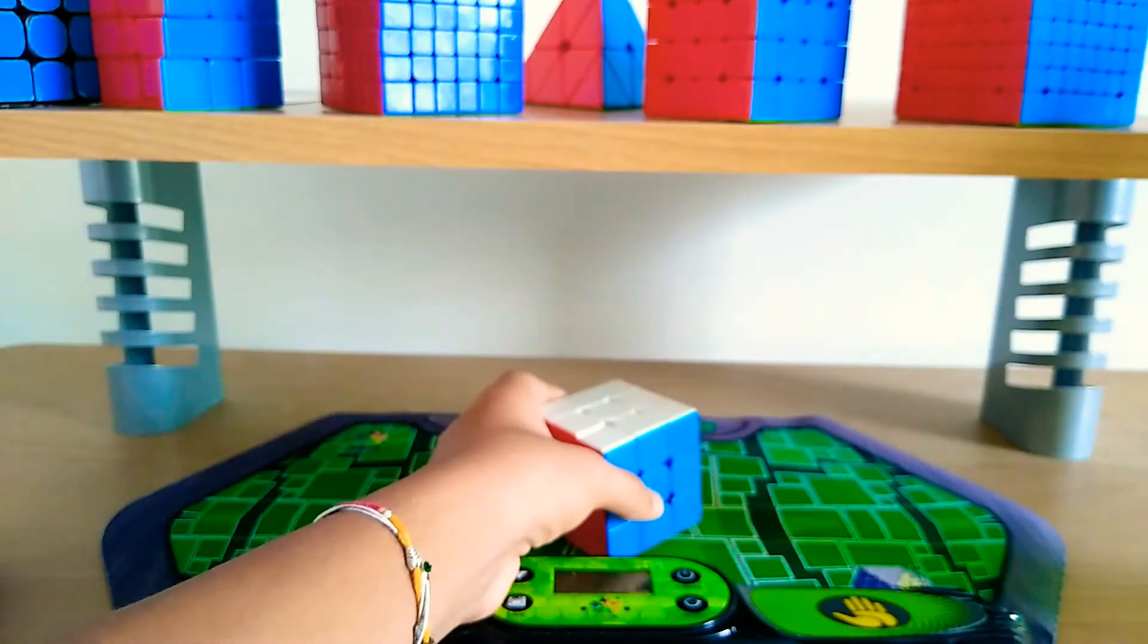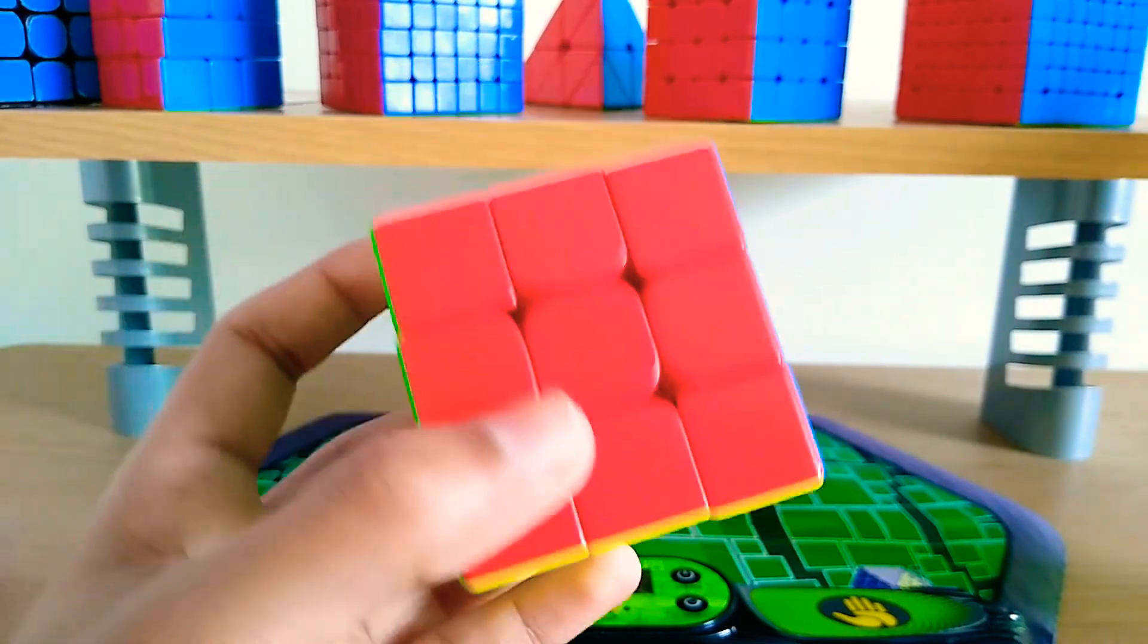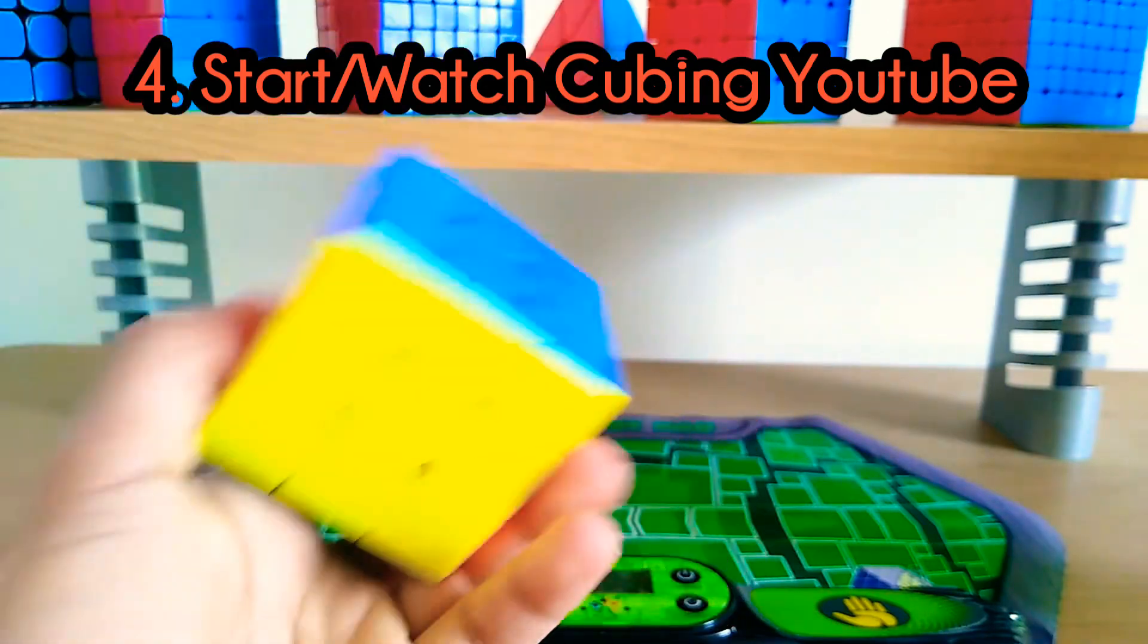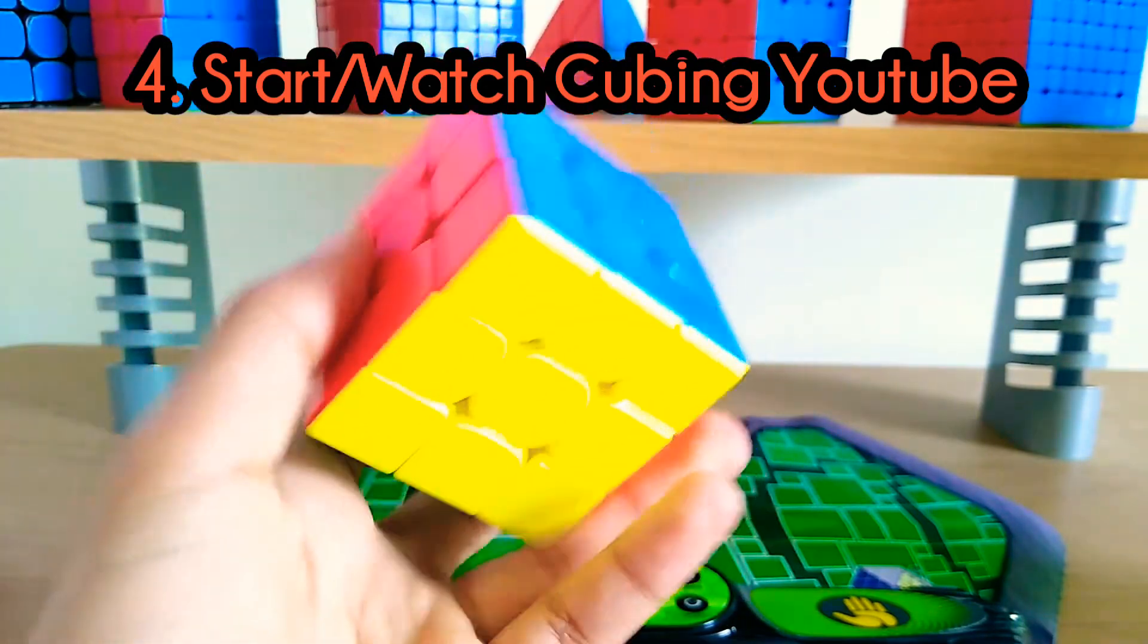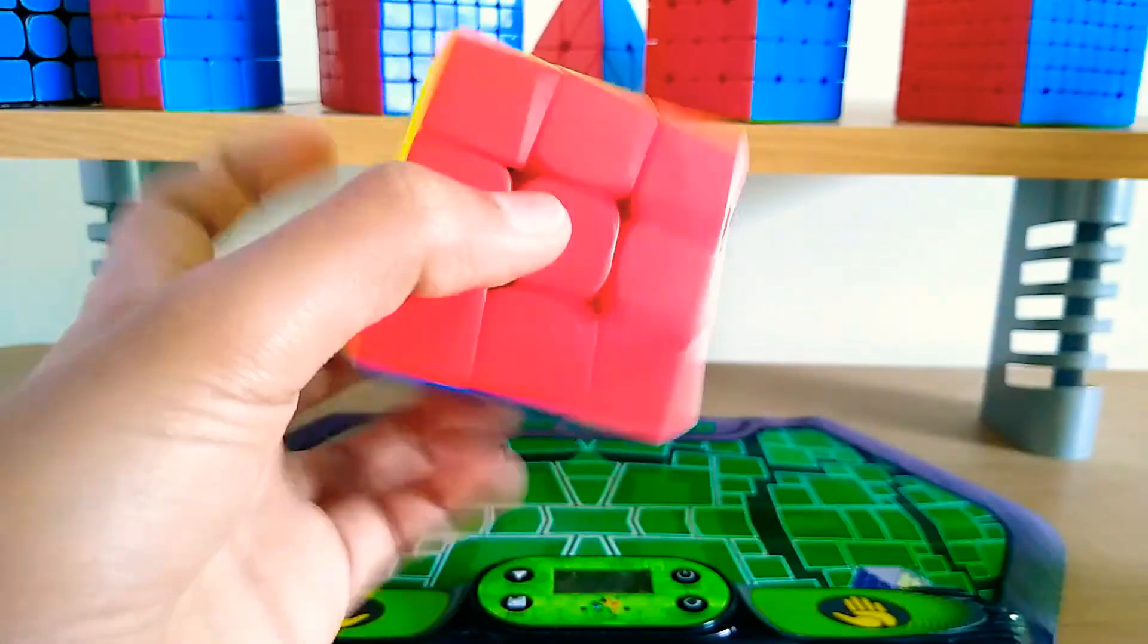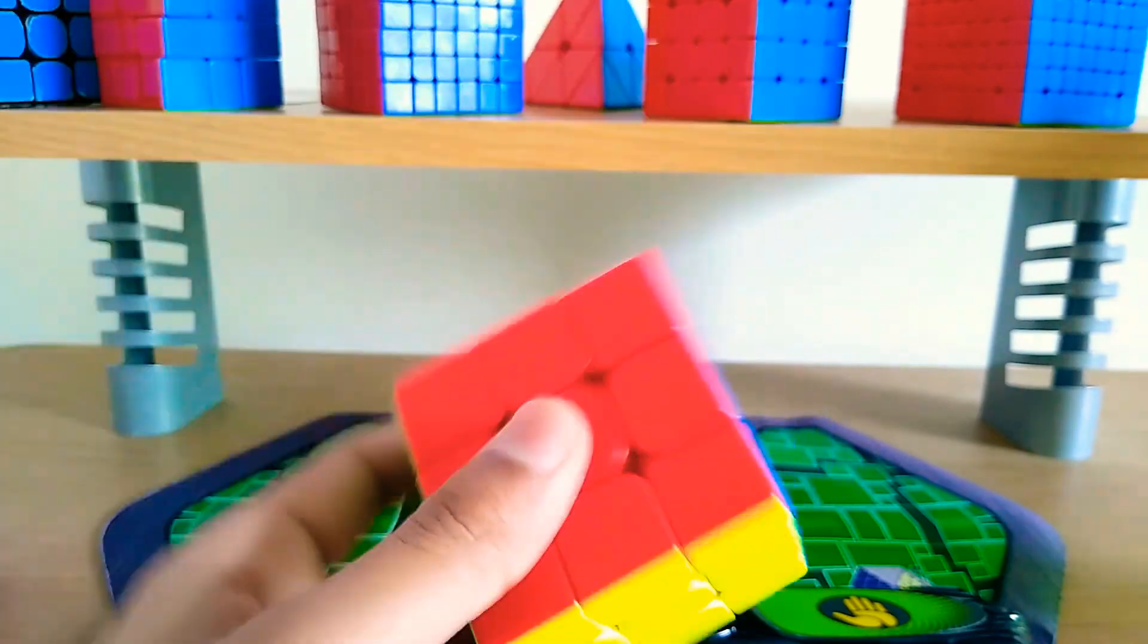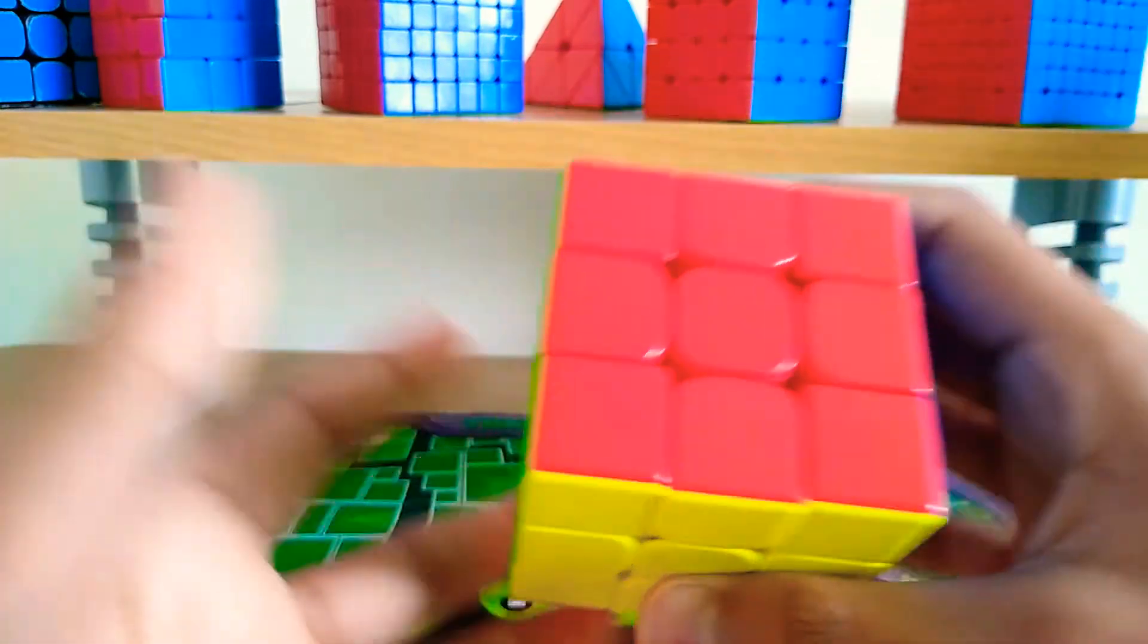Okay, guys, so my fourth tip has to do with social media or YouTube, mainly YouTube. And my fourth tip is to start a YouTube channel or to watch YouTubers who do Cubing, such as CreatorCuber, perhaps. But other than that, big YouTubers like CubingEncoded, CubeSelfHero, Tingman, and a bunch of other people make amazing content about Cubing that keeps me motivated to keep going, and it probably will work for you, too.